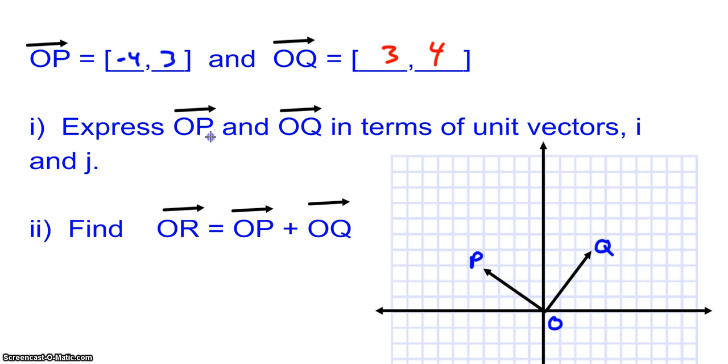All right, so if I want to express OP as a unit vector, so OP, we can call, I'll just put the answer up here, it'd be negative 4i plus 3j. Make sure you put those arrows there. This is 3i plus 4j. The arrows up here.